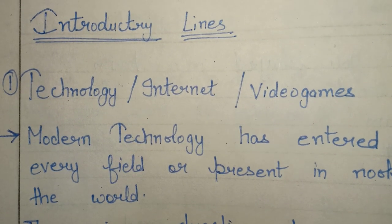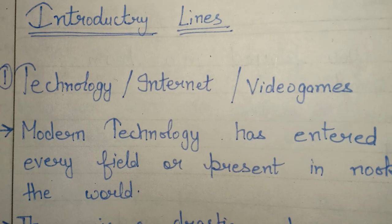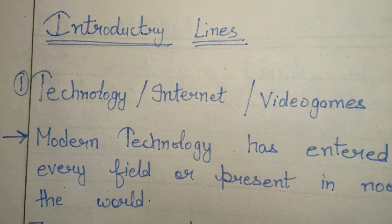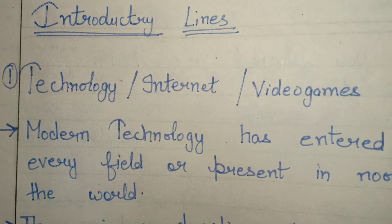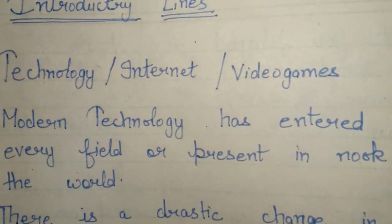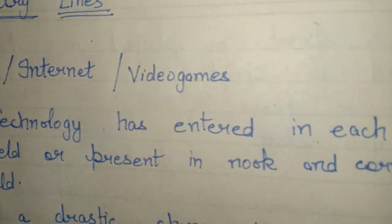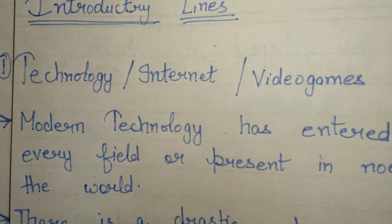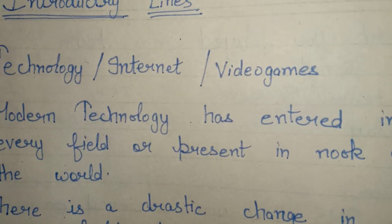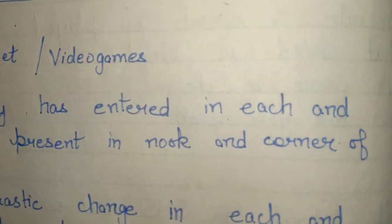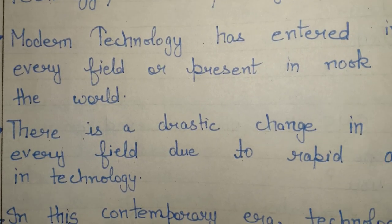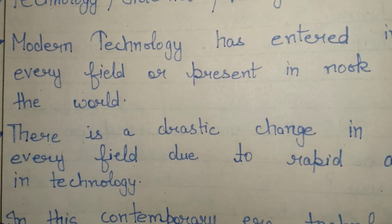Our first topic is related to technology, internet, or video games. If you get an essay on any of these three topics, you can use these hook lines. The first hook line is: 'Modern technology has entered in each and every field and is present in nook and corner of the world.'